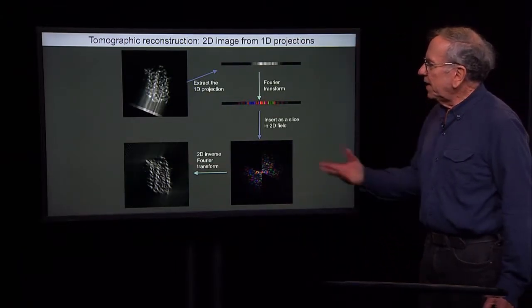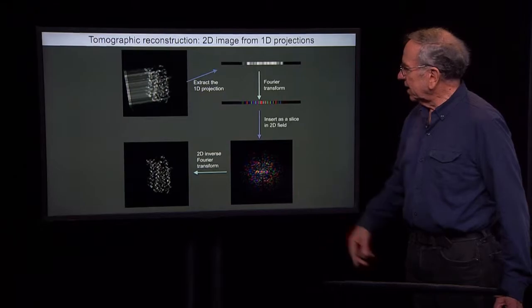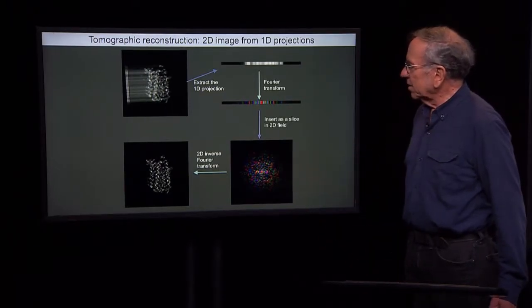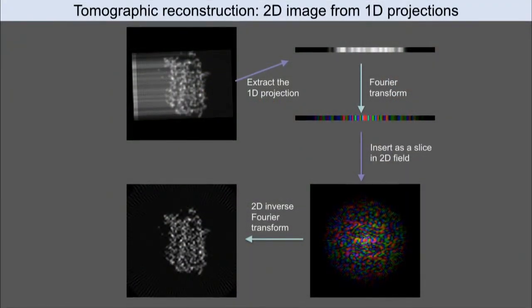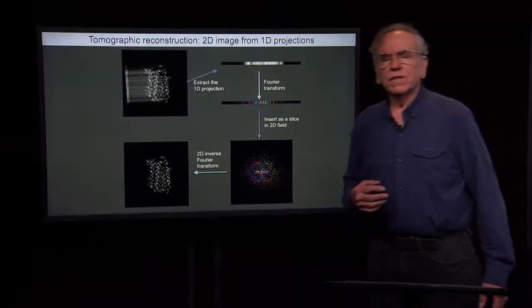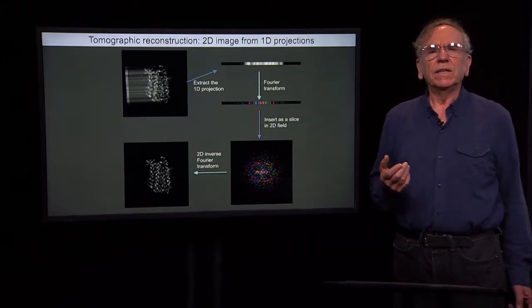But if we now finish collecting an entire set of angles, we actually get quite a good reconstruction. Well, what did we do? We just filled in line by line slices of the Fourier transform, and then we compute the inverse transform and got a 2D reconstruction.